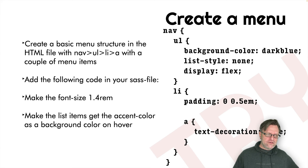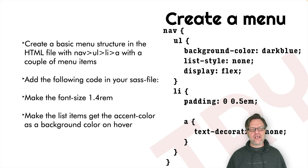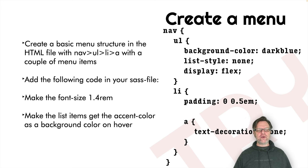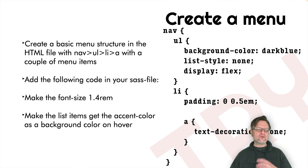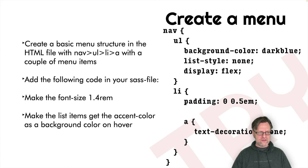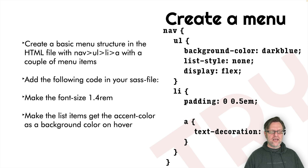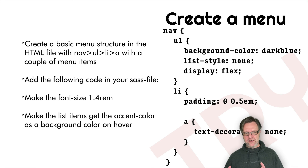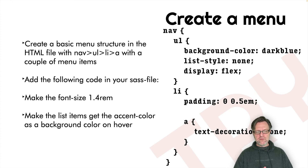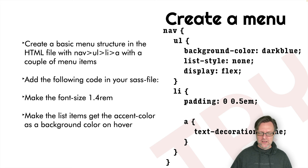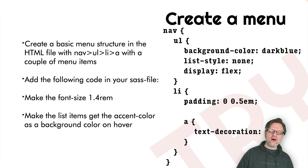Let's try to work with this a little bit. Create a basic main structure in the HTML file with a nav, and then use an unordered list with a couple of list items, and anchors inside those with some menu items. Then add the code to the SASS file. Make the font size 1.4 rems, and make the list items get some kind of effect when you hover over them — set the accent color as the background color on hover.